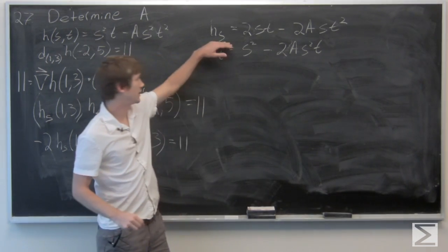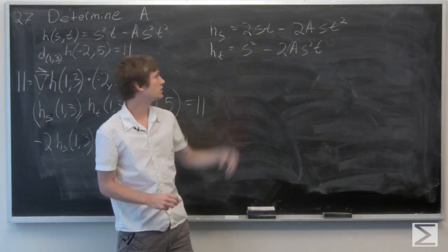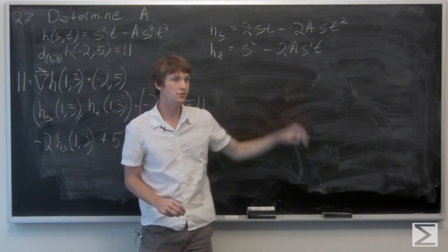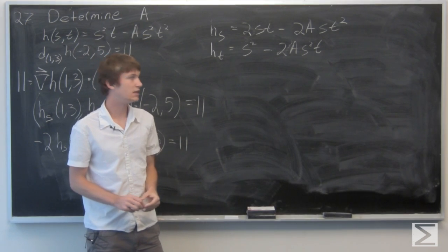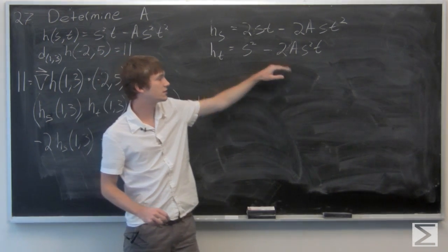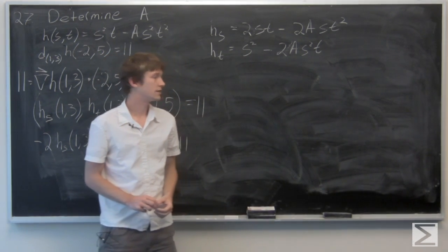And we see that ∂h/∂s equals 2st minus 2ast², and ∂h/∂t equals s² minus 2as²t.